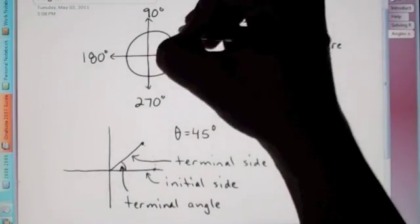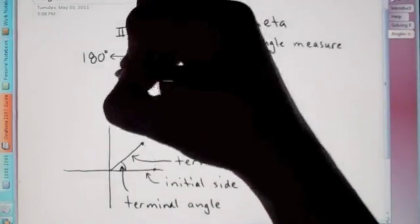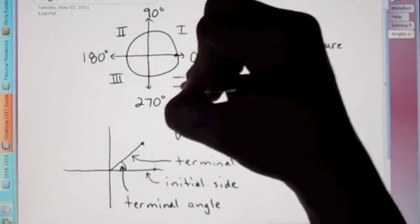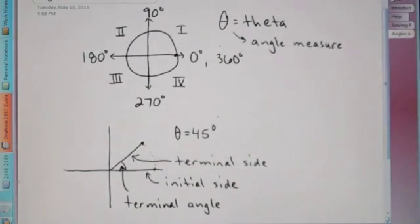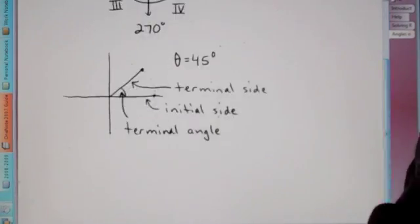Don't forget quadrants. This is quadrant one, two, three, and four. One, two, three, four. We do counterclockwise. So, let's do some problems here.